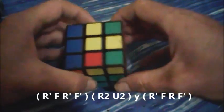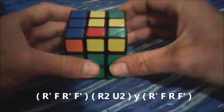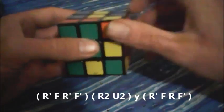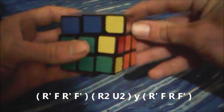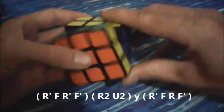So the whole algorithm actually flows pretty nicely. You go R' F R' F' R2 while doing the U2, sledgehammer R' F R F'.